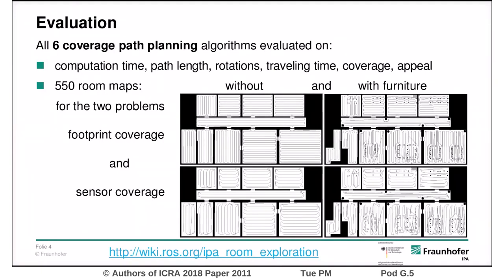We tested the resulting system in simulations so that real-world variance does not affect the results. We also tested the algorithms on a real robot, but without recording comparable results. Each map is available with and without furniture. Every algorithm is capable of covering 96–99% of the environment when no furniture is present, and 92–96% when furniture is present. So the algorithms in general achieve the ultimate goal.